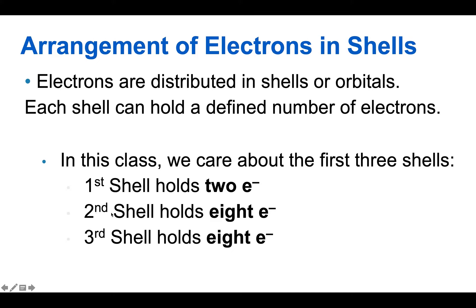The second shell holds up to eight electrons, and the third shell holds up to eight electrons. A way to remember this is 2, 8, 8 — with 2 being closest to the nucleus, then 8 for the second, and 8 for the third.